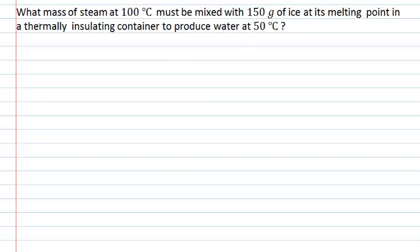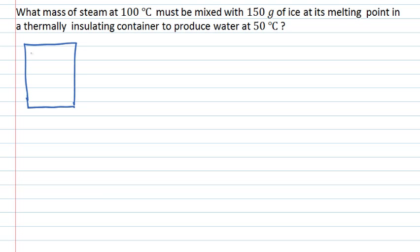In this question, we're asked what mass of steam at 100 degrees C must be mixed with 150 grams of ice at its melting point in a thermally insulating container to produce water at 50 degrees Celsius. We have an unknown mass of steam and a known mass of ice, which is 150 grams.